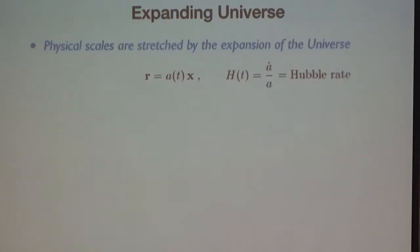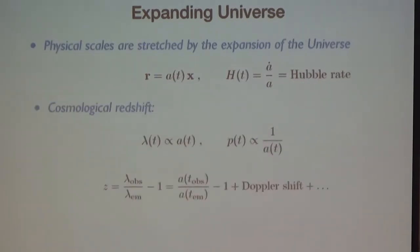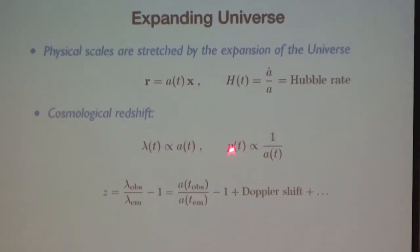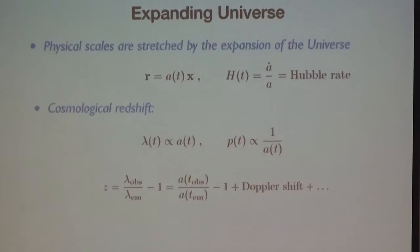The expansion of the universe is characterized by an expansion rate which we call the Hubble rate. This expansion has important consequences, one of which is the cosmological redshift. Because all physical scales are stretched by the expansion, physical wavelengths are also stretched, which implies that physical momenta decay as 1 over the scale factor. Because the universe is expanding, the scale factor a(t) grows with time.